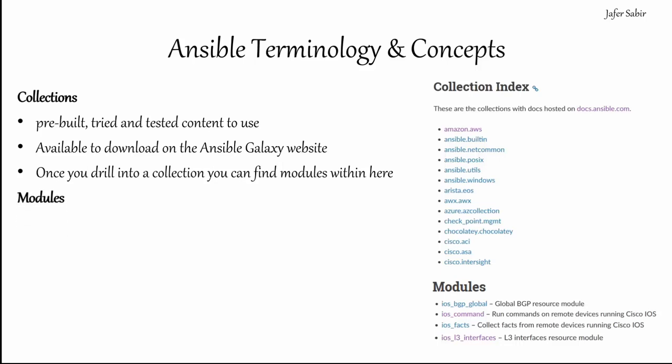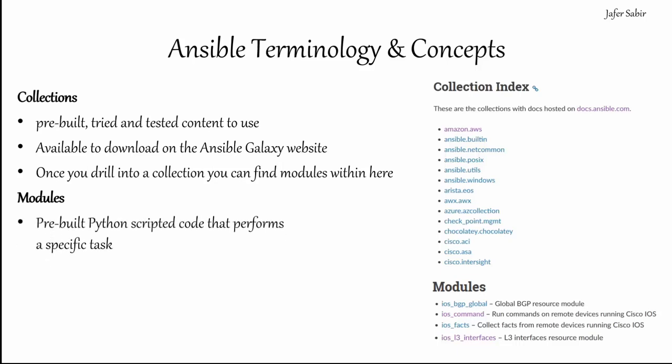Modules are a sub-component of collections. Ansible runs on Python and is built based on Python scripts — those scripts are called modules. The modules are pieces of Python code that perform a specific task. Ansible comes with lots of modules, such as networking modules, storage, database, monitoring, utilities and Windows-specific modules.